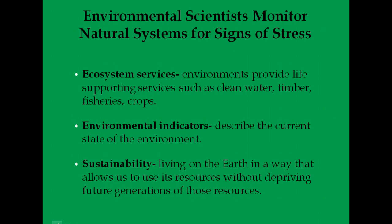Scientists look at the services that natural ecosystems provide: clean water, timber, fisheries, and crops. We need to monitor those services to make sure they're not being overused. Environmental indicators describe the current state of the environment — similar to how a high temperature or elevated heart rate signals something is wrong in our bodies. For oceans, scientists look at salinity, temperature, and carbon dioxide and oxygen levels to detect changes. These indicators don't always tell us the cause, but signal where to look more closely.